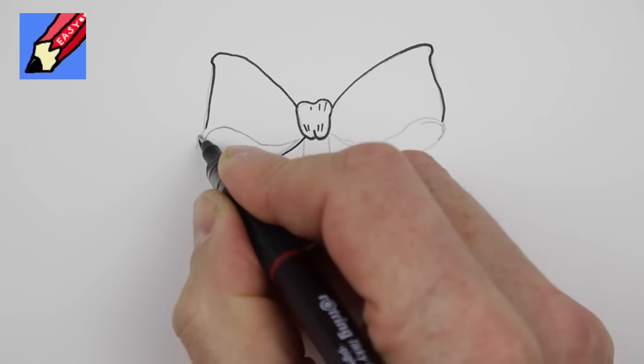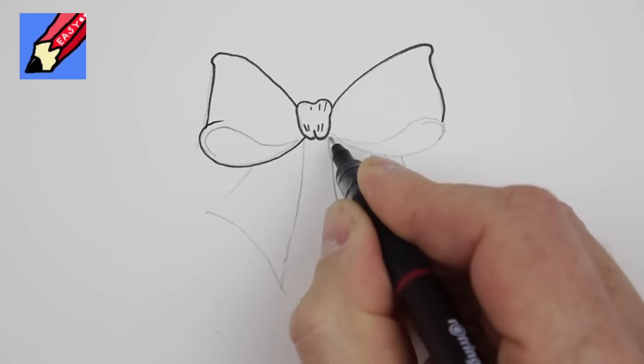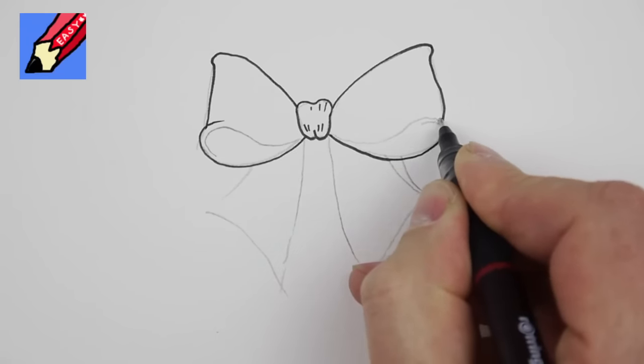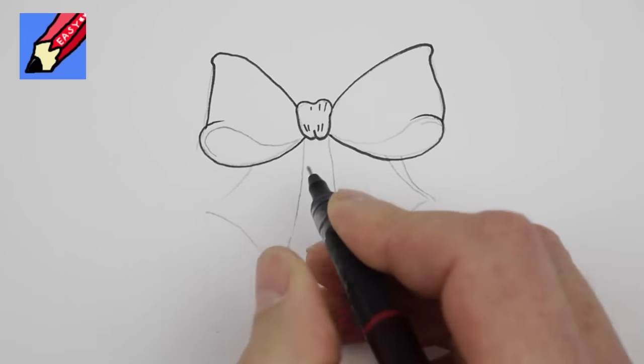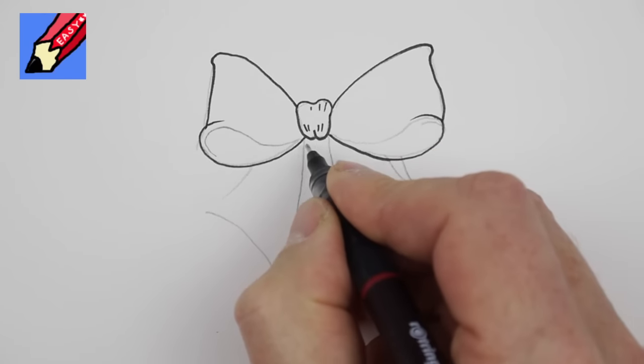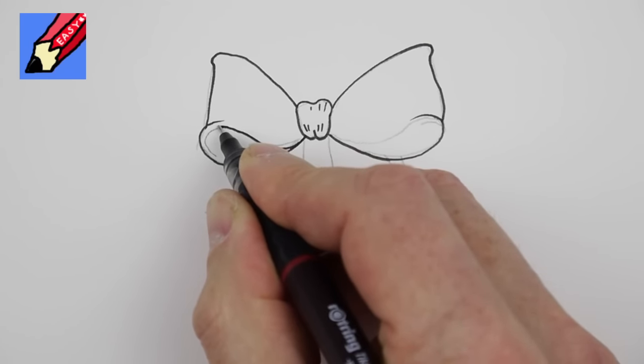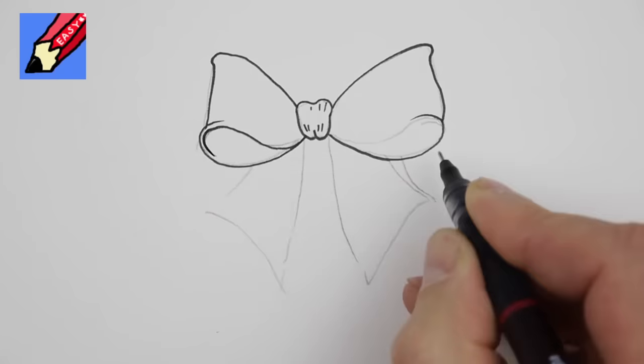And then from right down here, follow this line around here and just let it flick around the corner. Come down here and flick around the corner, and then again bring this up around here and just flick it around.